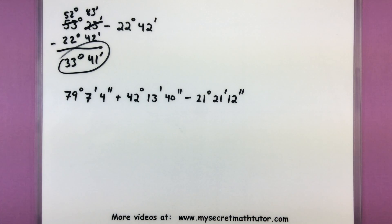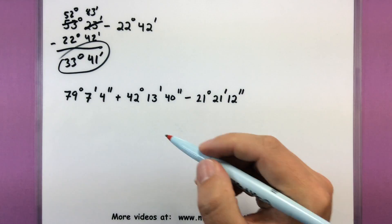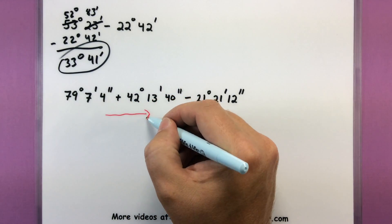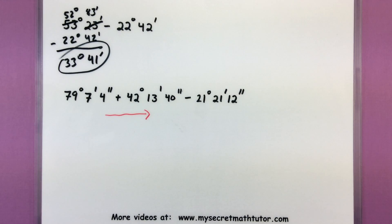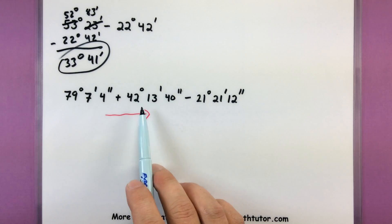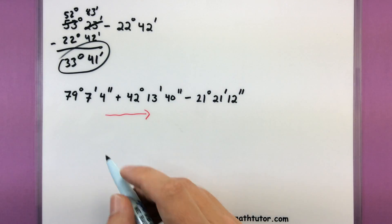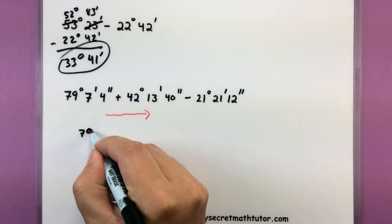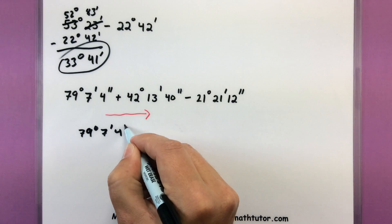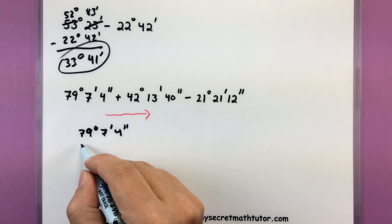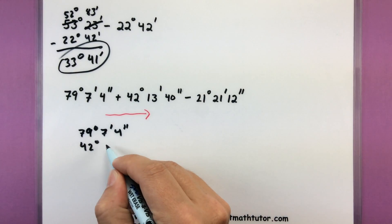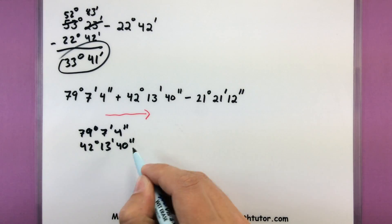If you have lots of angles being added and subtracted together, the process is really the same. Remember that when dealing with addition and subtraction mixed into the same problem, you want to work these from left to right. That just makes sure that you follow your order of operations. So for a problem like this, we'll add these two angles, get a result, and then we'll go ahead and subtract this one out, see what that result is after that. So 79 degrees, 7 minutes, 4 seconds, we will add to that 42 degrees, 13 minutes, 40 seconds.